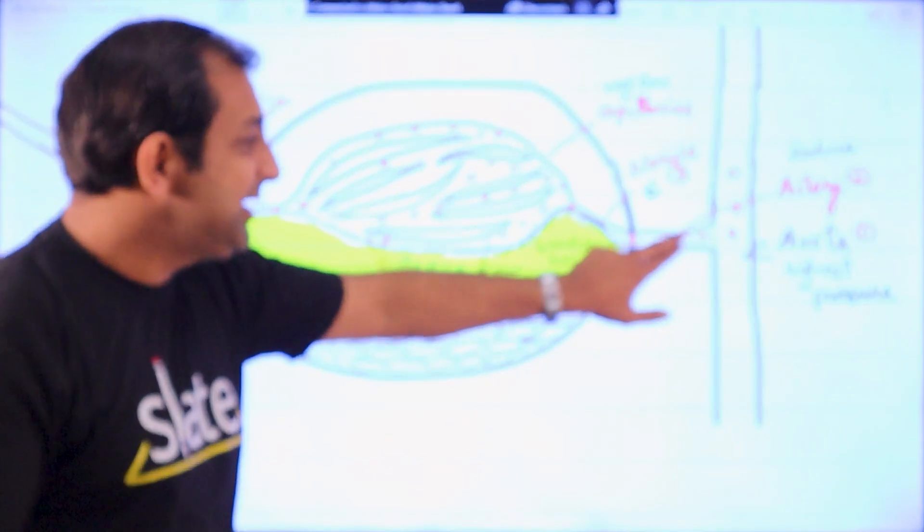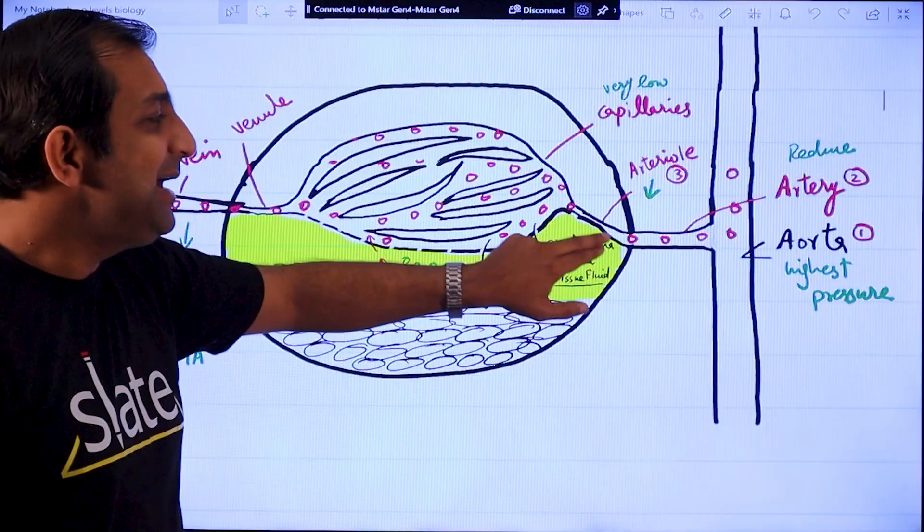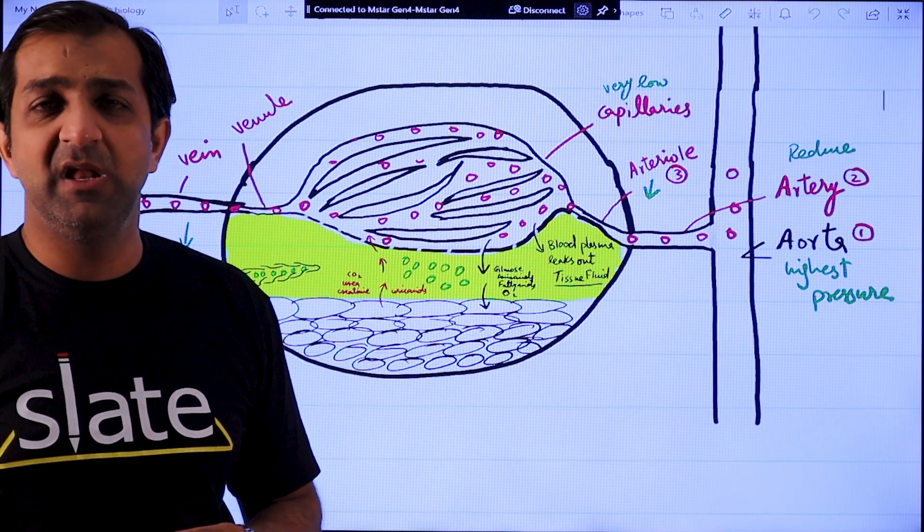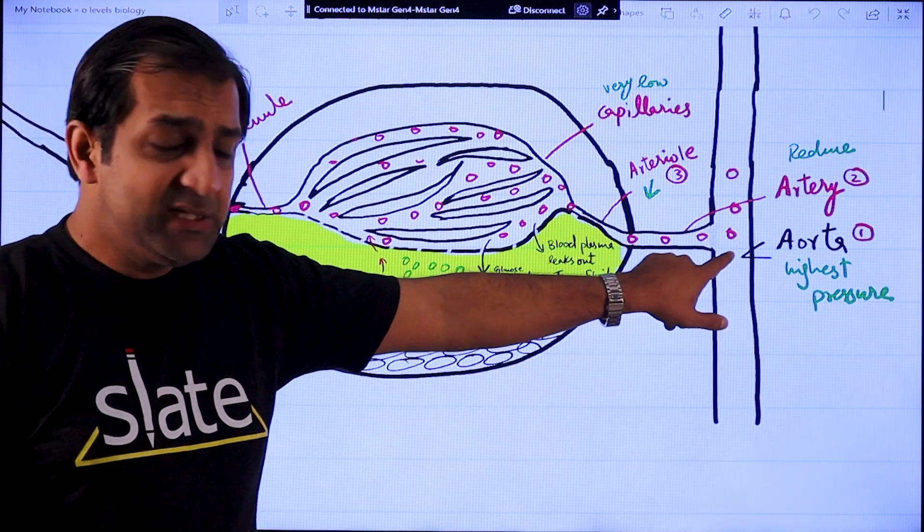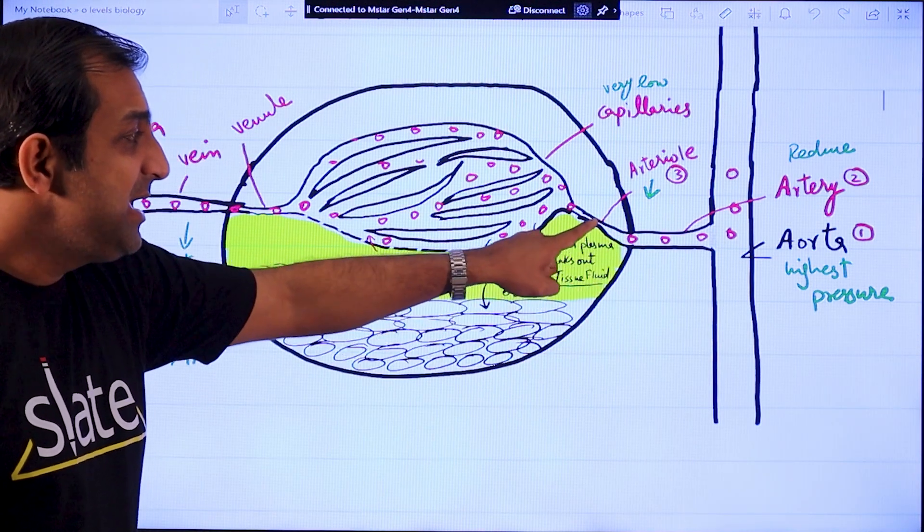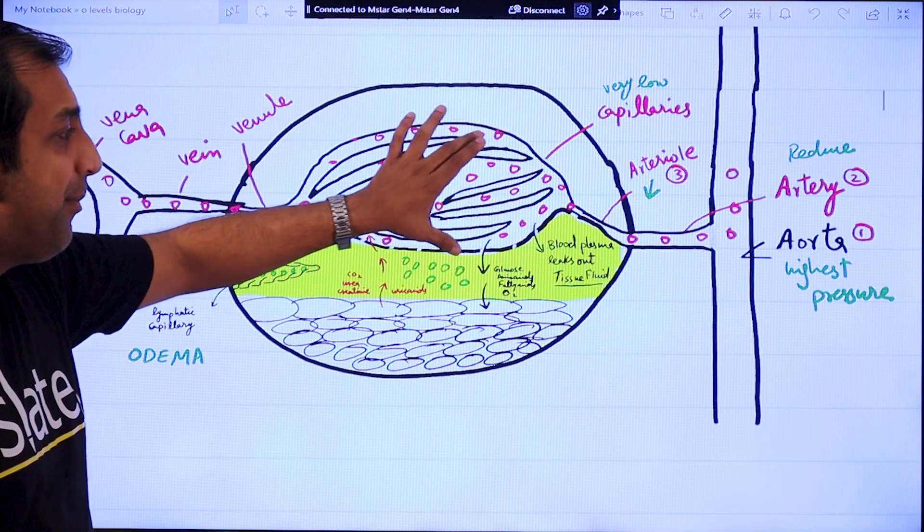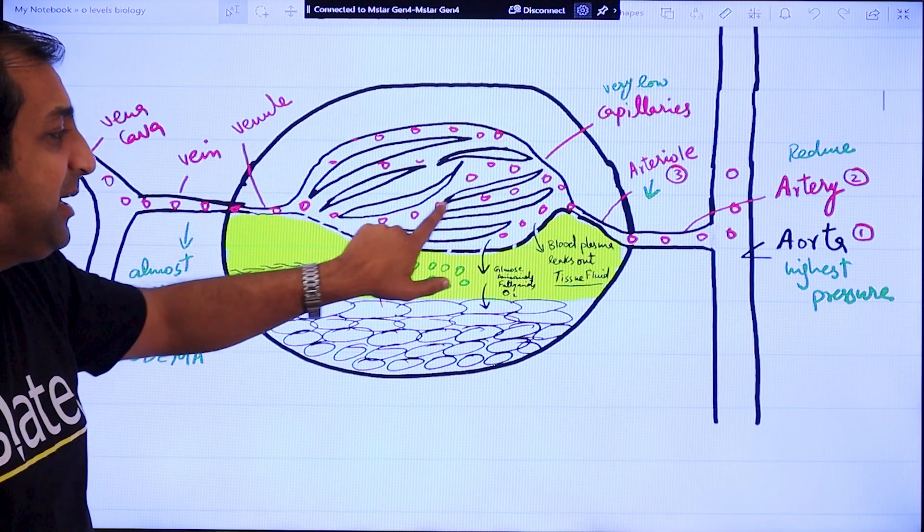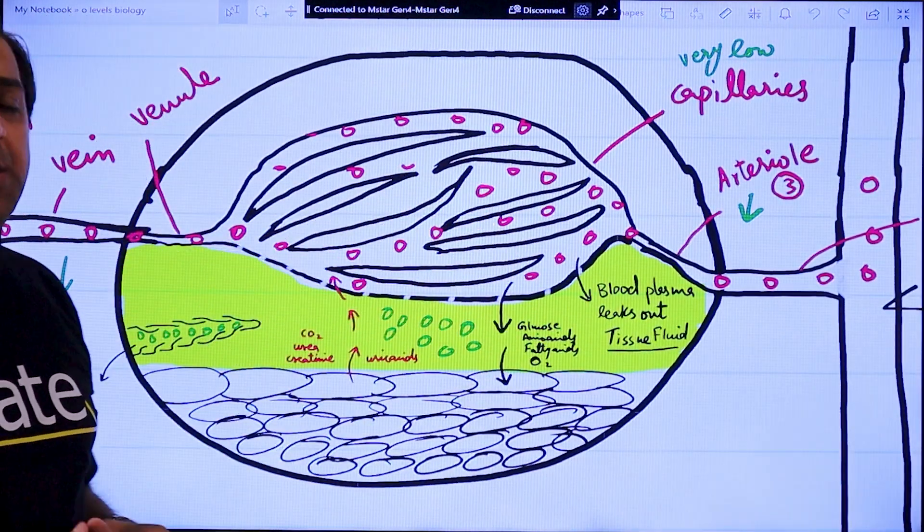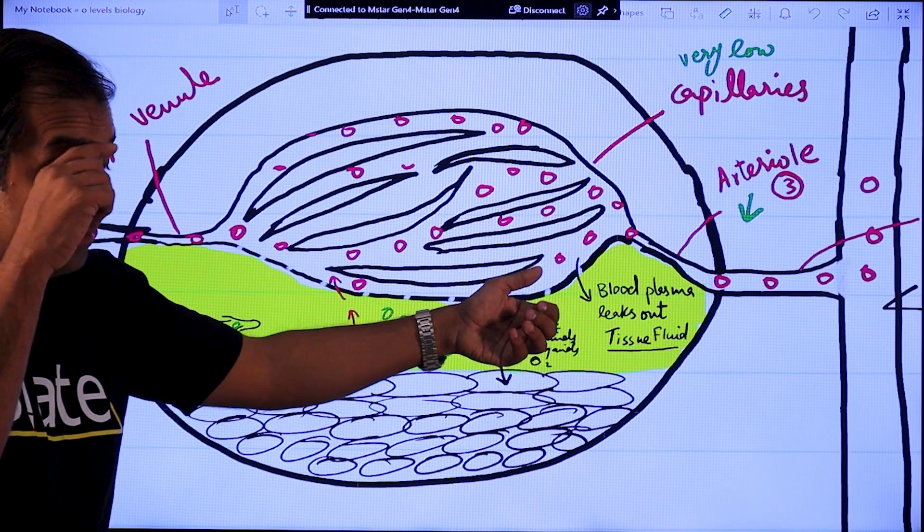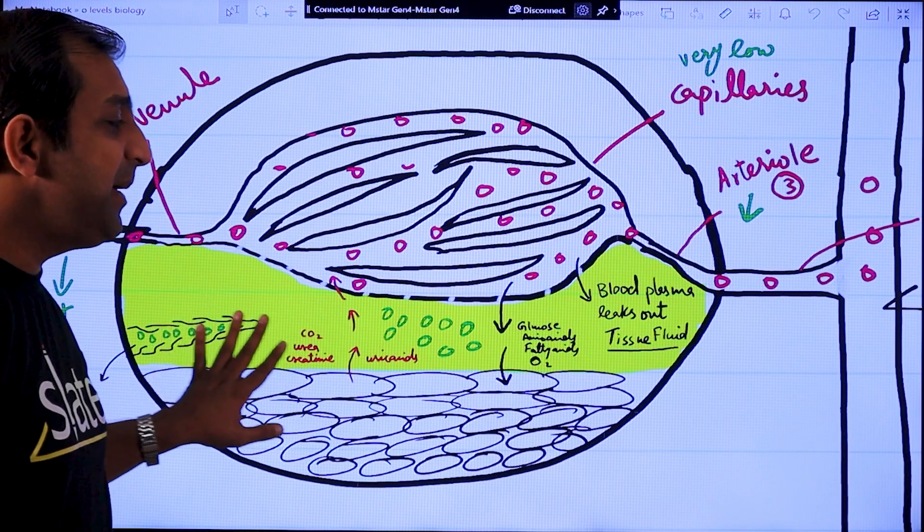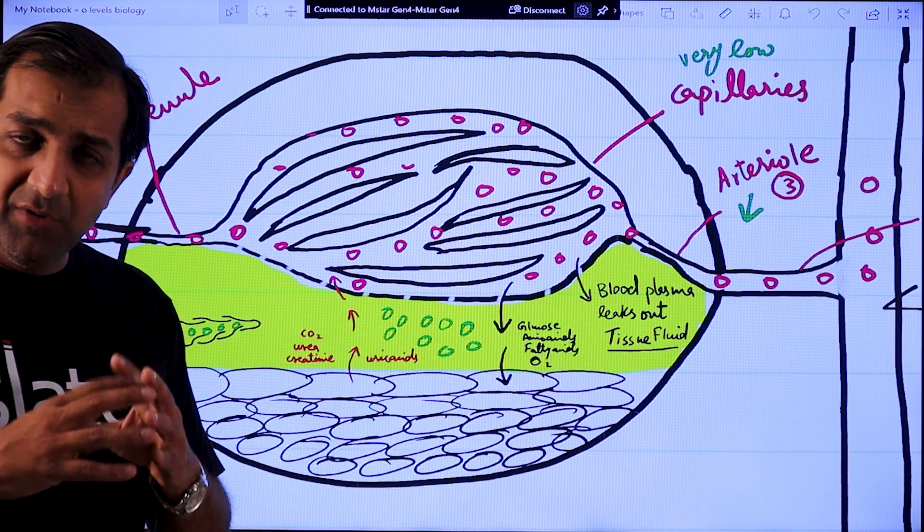As soon as this artery connects with this organ, inside this organ this artery is converted into a further narrower blood vessel which is called arteriole. Arteries are converted into arterioles, and arterioles are further converted into capillaries. The capillaries form a wide space between the organ cells.